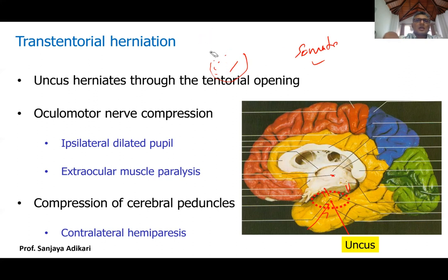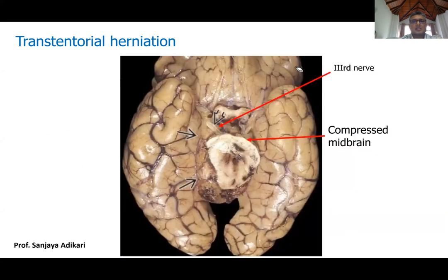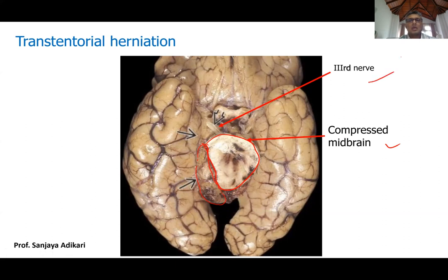In severe cases of transtentorial herniation, not only the oculomotor nerve but also the midbrain itself — specifically the cerebral peduncles — can get compressed. This image of the midbrain shows it has been compressed significantly by the herniating uncus and parahippocampal gyrus of the temporal lobe. The third cranial nerve is visible in that area.